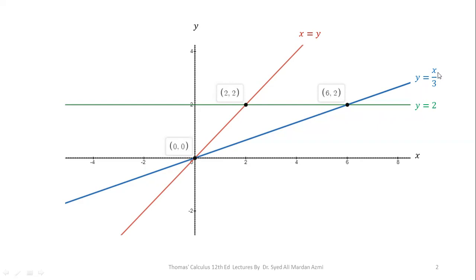The second line, y = x/3, is represented in blue, passing through points (0,0) and (6,2) as already discussed. The third line, represented in green, is y = 2, which passes through the point where the y-axis value is 2. So our region of integration, bounded by these three lines, is this triangular region.